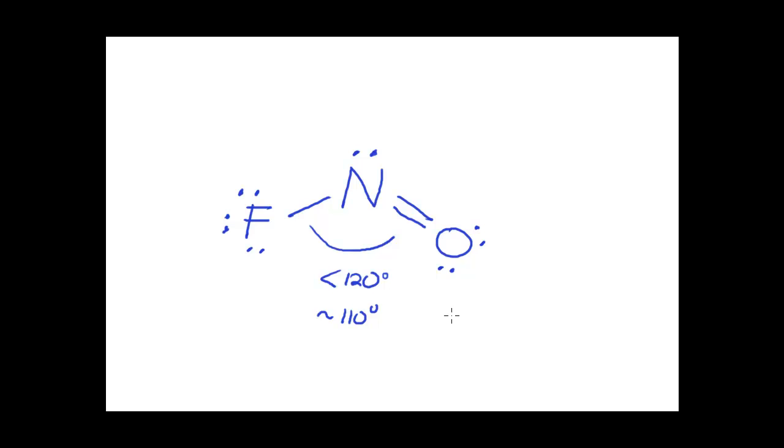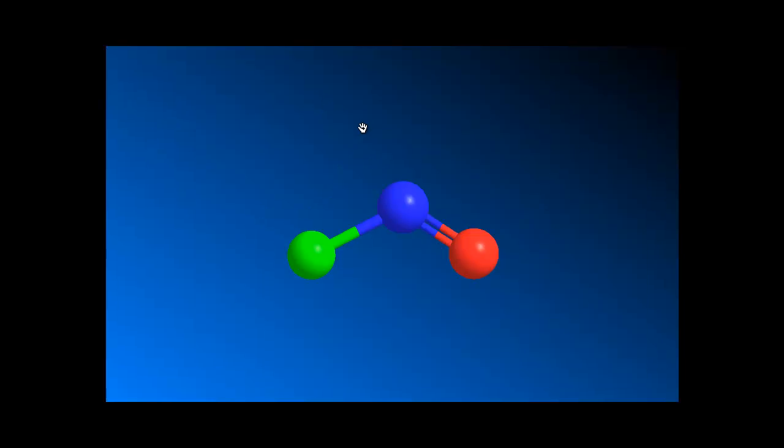Now, what I want to do is illustrate to you, switching to a ball and stick model, what I mean by having all of these atoms in the same plane when I have a bent geometry. Here's a ball and stick representation of nitrosyl fluoride, where my fluorine is here, my nitrogen is here, and my oxygen is here.